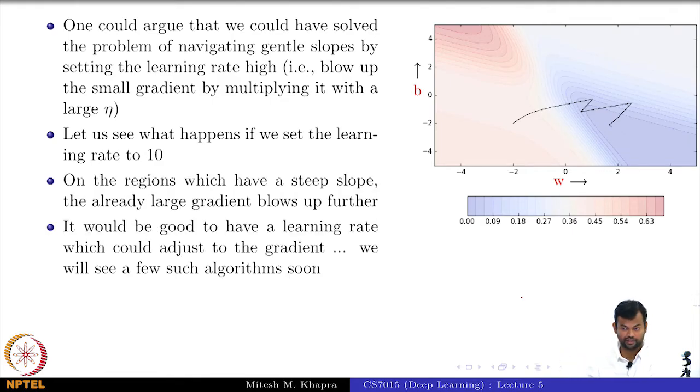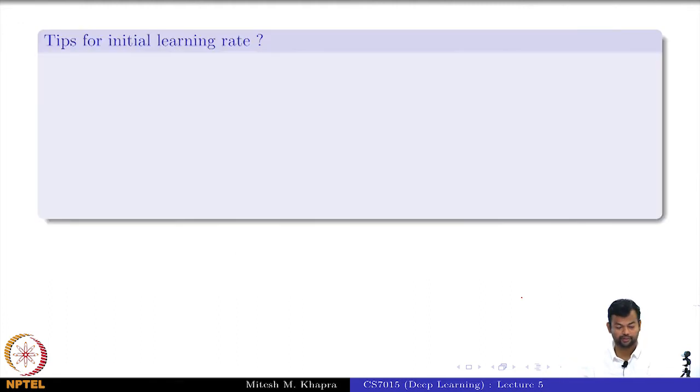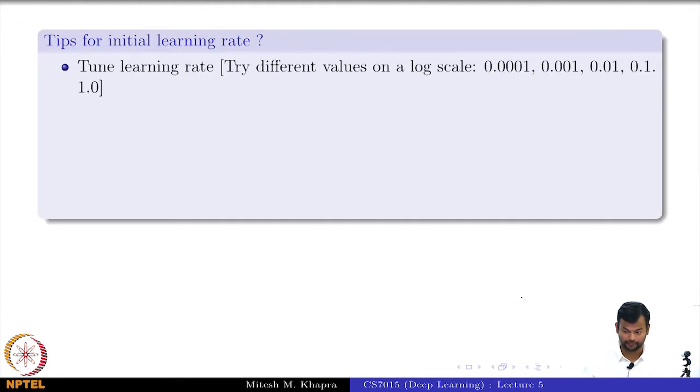We will see such algorithms soon where we try to adjust this learning rate. Now here are some tips for the learning rate. How do you adjust these learning rates and fix the learning rate? Learning rate is typically something known as a hyperparameter. Your parameters are learned using the objective function. Eta is not a part of the objective function, you are not computing gradients with respect to it. In practice you could try these different values on a log scale.